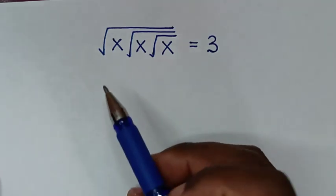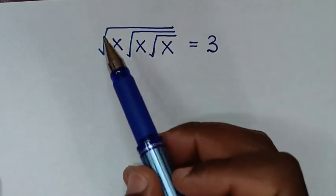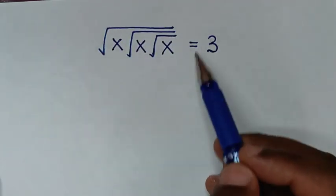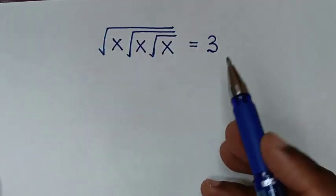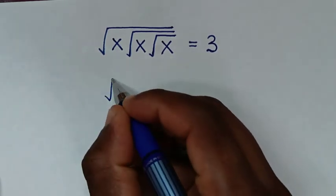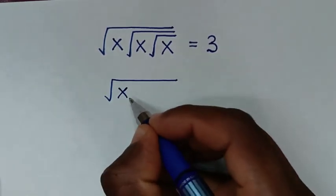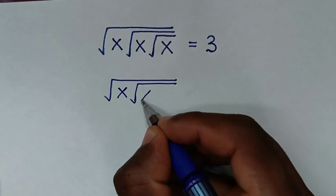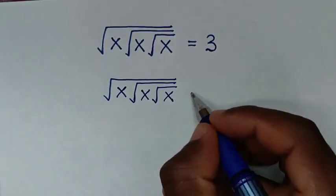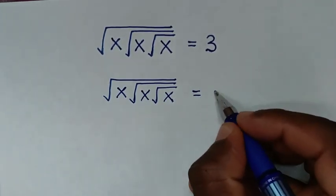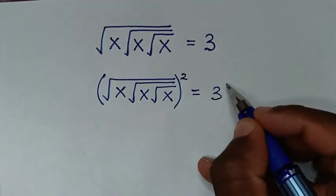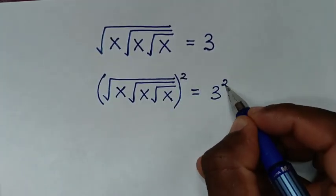In the first step we will start by removing the first square root. Therefore we will square both sides. On the left side we have square root of x under square root of x under square root of x, equal to 3. We will square this side and also square the other side.